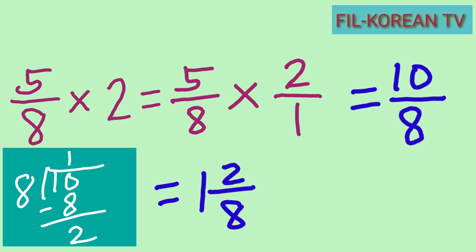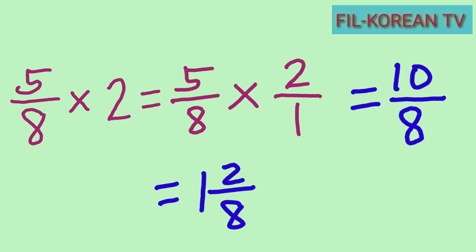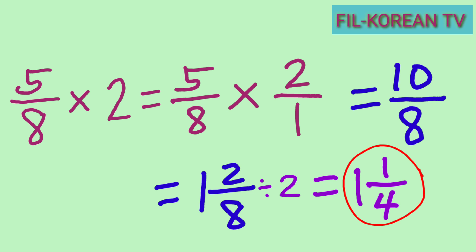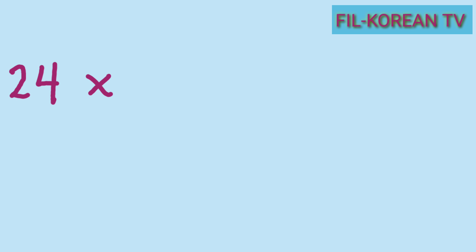So the answer is 1 and 2/8. The quotient 1 is the whole number, the remainder 2 is the numerator, and the divisor 8 is the denominator. Now look at the fraction 2/8 — we can still reduce this to lowest terms because 2 and 8 can both be divided by 2. Dividing: 2 ÷ 2 = 1 and 8 ÷ 2 = 4, so the answer is 1 and 1/4. Let's answer another problem: 24 times 3/4.